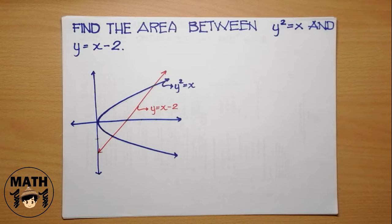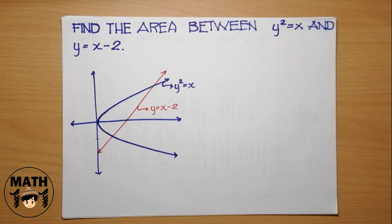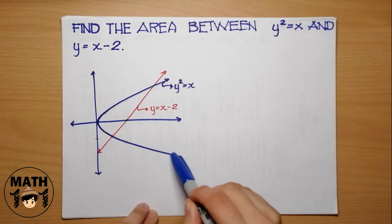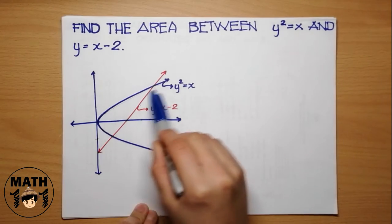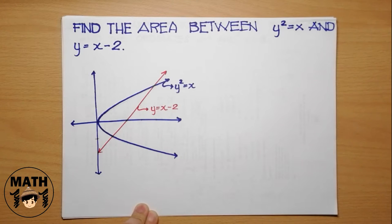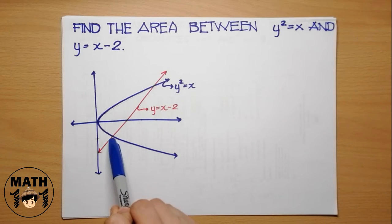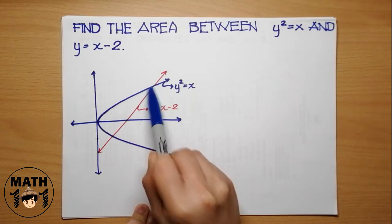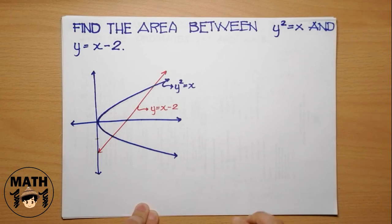Find the area between y squared equals x and y equals x minus 2. For this problem, the graph is already given. So, ito yung ating parabola and yung line natin is this. Ang wala ngayon dito is yung kanilang points of intersection, so hanapin muna natin yung point of intersection.